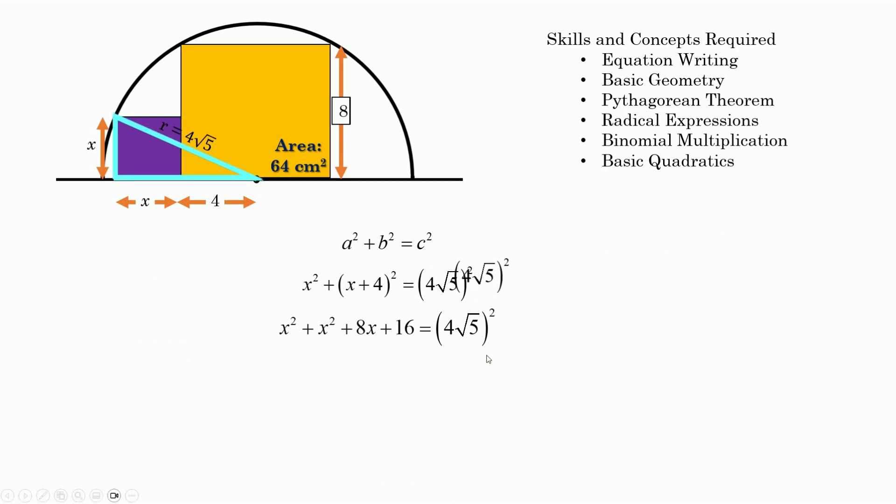So now let's simplify that 4 root 5 squared. Take it and multiply it by itself. We get 16 times the square root of 25. The square root of 25 is of course 5. 16 and 5 makes 80. So this is what we have. Let's go ahead and simplify this, clean our screen up a little bit. So we get 2x squared plus 8x plus 16 is equal to 80. We're going to go ahead and move the 80 to the other side using inverse operations, get it set equal to 0 because it is quadratic.